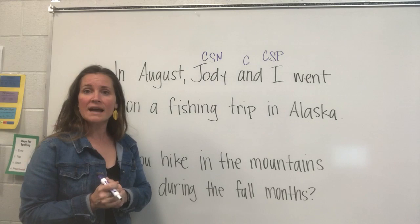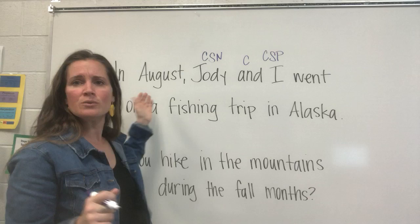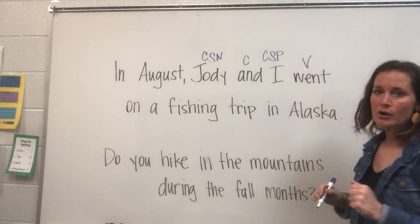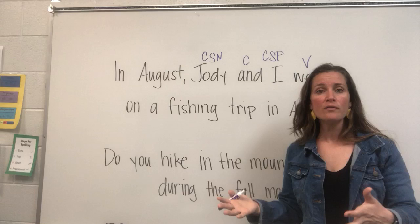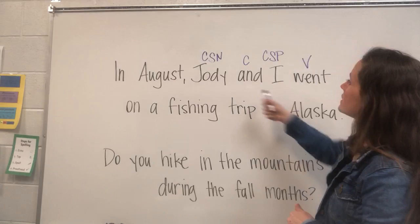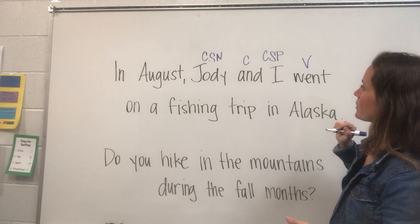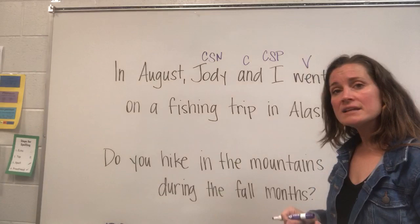The next question we're going to ask is: what is being said about Jody and I? What did Jody and I do in August? Well, we went on a fishing trip in Alaska. So "went" is our verb — it's a past tense verb. We don't have any other verbs, no helping verbs. We have gone over helping verbs and verb phrases, but in this case we don't have one. Jody and I went. So right there we have a sentence: we have a subject and we have a verb, or predicate. So "Jody and I went" — there is our verb.